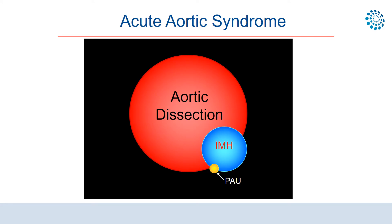Aortic dissection accounts for approximately 70% of Acute Aortic Syndrome cases, intramural hematoma for 15%, and penetrating aortic ulcer for the remainder.